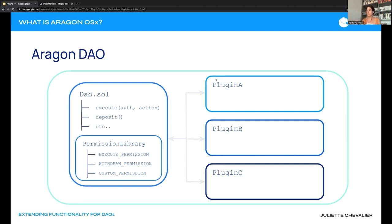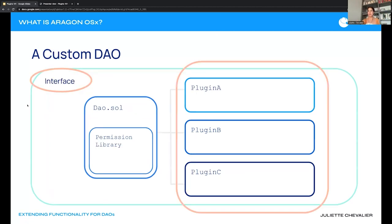Plugins are how we extend any functionality the DAO will be able to use to interact across the ecosystem. There's a green circle representing one DAO, and we interact with it through an interface — this may be through the Aragon app, a CLI in a terminal, or a custom UI. There's always an interface through which we interact with the DAO and extend functionality through plugins.